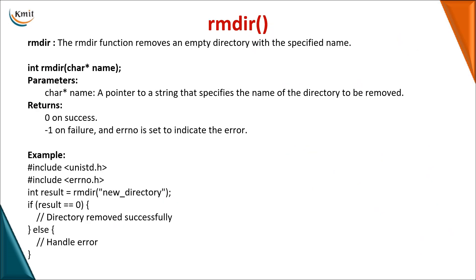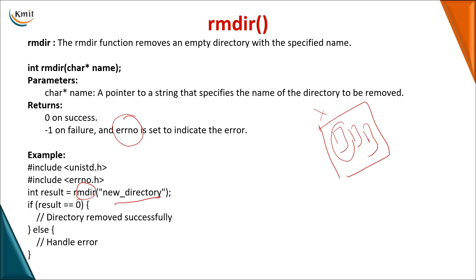Once you are done with operations and no longer require the directory, you can remove it using rmdir. Specify the name of the directory you want to delete. On success it returns 0, otherwise -1 or a specific error number. Importantly, rmdir can only remove a directory when all files inside it have been removed first. If any single file still exists in the directory, rmdir will fail and return -1 or an error number.